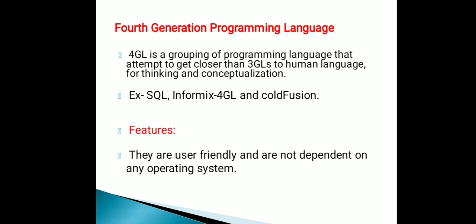Different types of software attempt to get closer than 3GL to human language. What is human language? The different examples of human interaction. Computer languages are designed this way to allow humans to interact with computers.